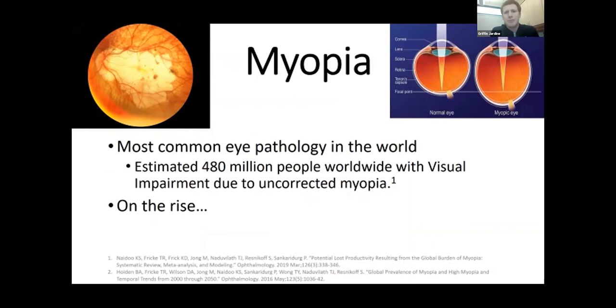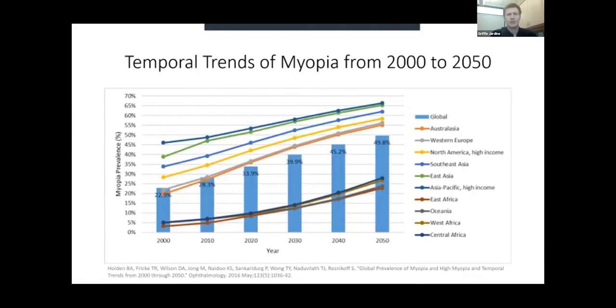Speaking of myopia, we're focusing on myopia related to axial elongation, in contrast to other forms like in ROP. Myopia is the most common eye pathology in the world at nearly half a billion people who are visually impaired due to uncorrected myopia. What's more concerning is that myopia is on the rise.